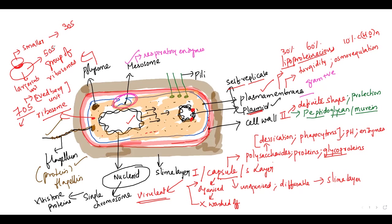There are no membrane-bounded organs like mitochondria, chloroplasts, Golgi, or endoplasmic reticulum — all these are absent. But remember that in photosynthetic bacteria, they are going to possess chromatophores inside the cytoplasm. The reserve food of the bacteria found in the cytoplasm is mostly in the form of glycogen, which is poly-beta-hydroxybutyrate. This is the reserve food material in the form of glycogen inside the cytoplasm.